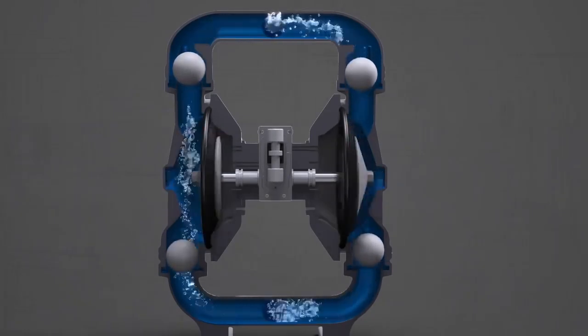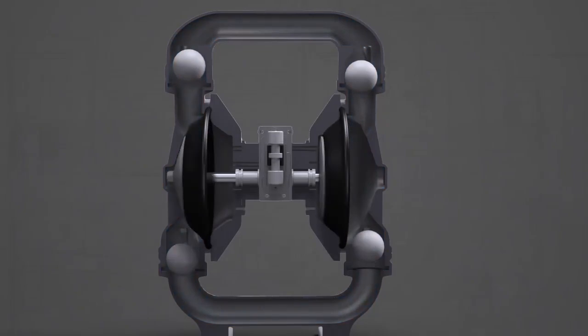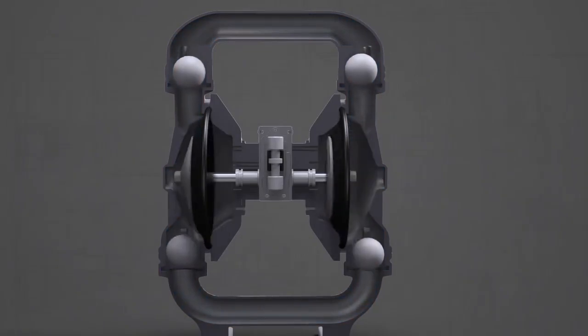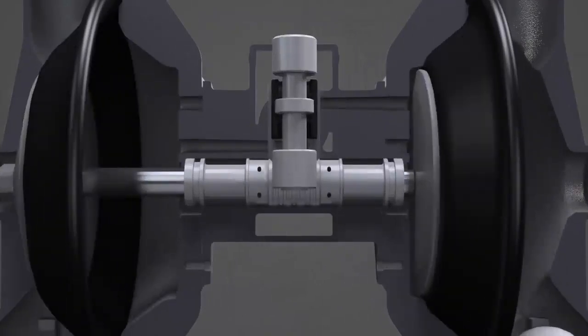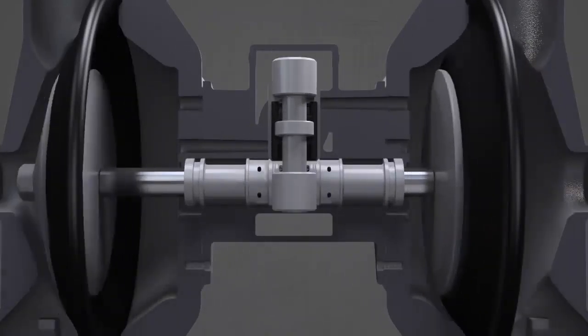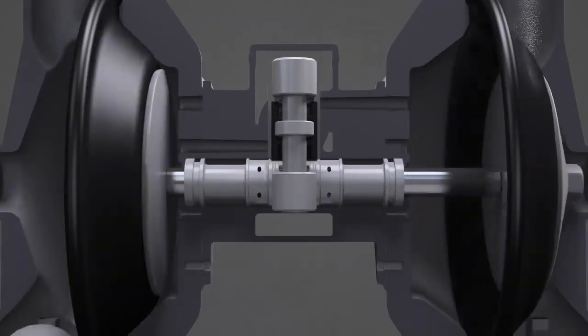The pump diaphragms are driven by pressurized air that is directed left and right by the movement of the main air valve. Here's how it works: when air pressure is applied to the pump, the main air valve moves up and down.